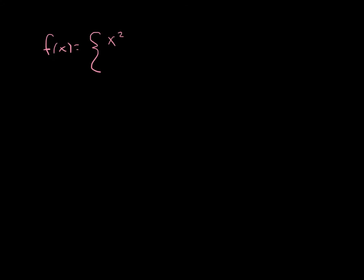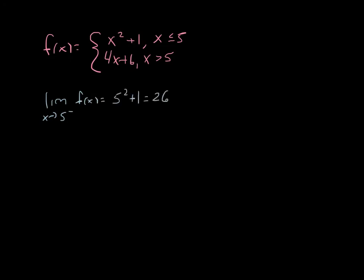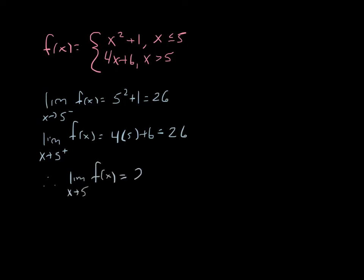One more example. Let's go with x squared plus 1. Looking at the limit from the left and from the right: from the left we're going to have 5 squared plus 1, which is 26. From the right we'll have 4 times 5 plus 6, which is also 26. So that tells us that the limit as x approaches 5 must be equal to 26.